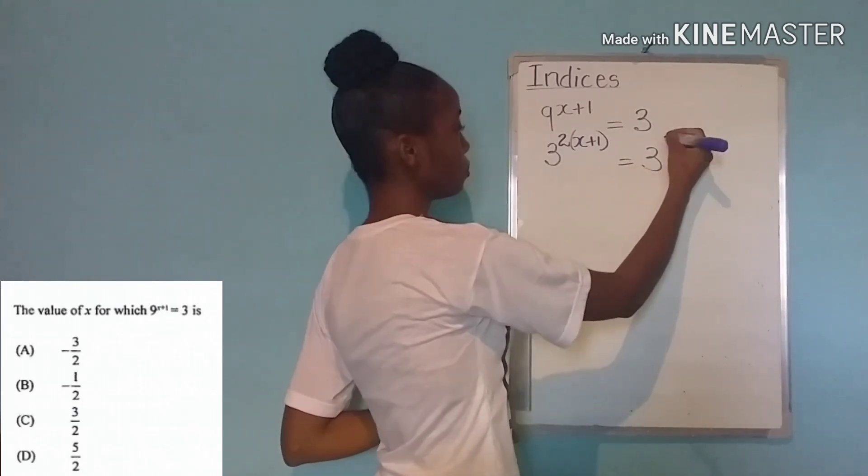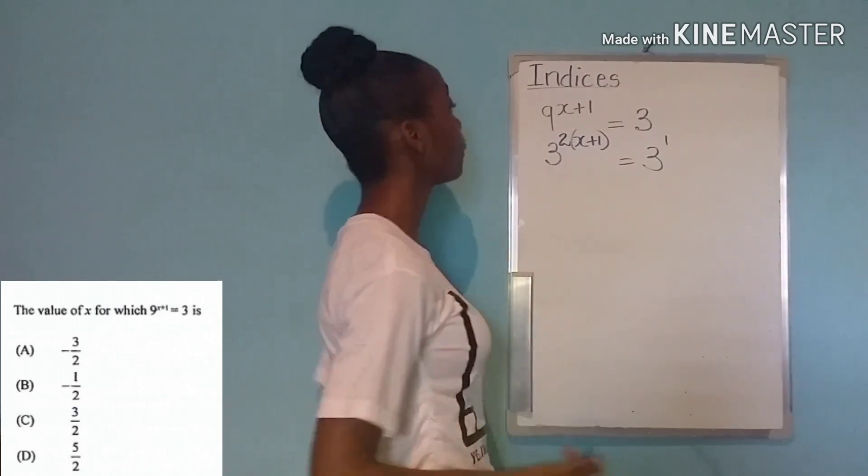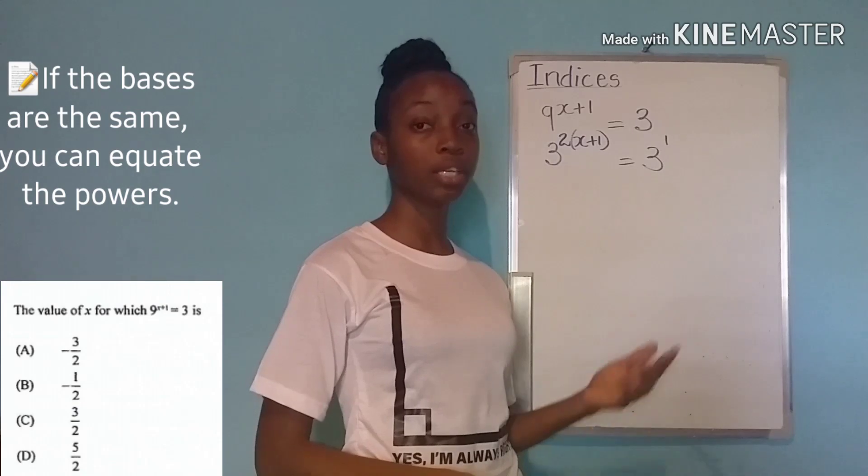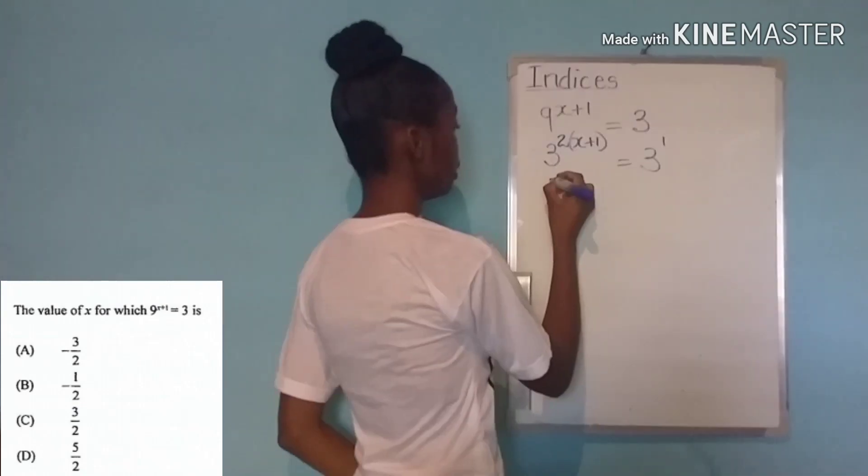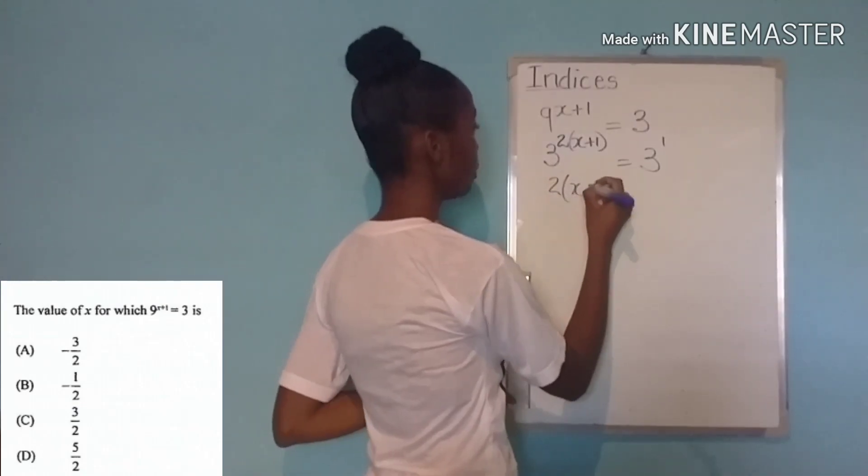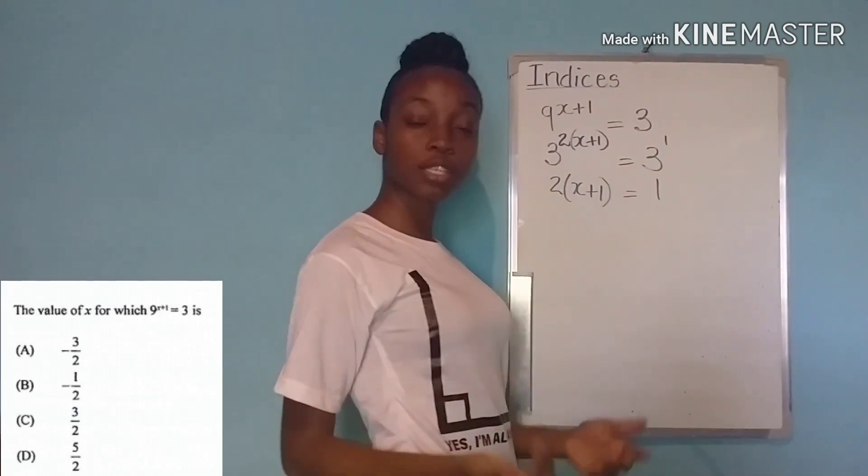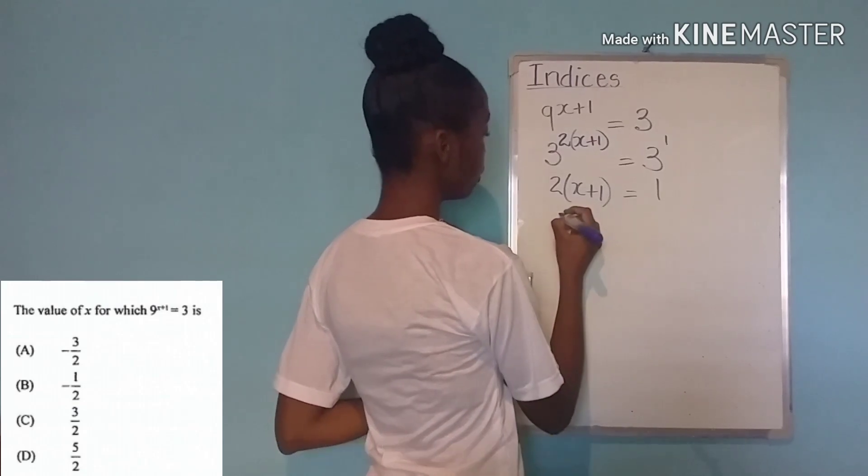And as we know this is three to the first power. The next thing we know is that if our bases are the same then our powers are equal because this is an equation. So two times x plus one is equal to one. And we are solving for x as the question requires. So here we go.